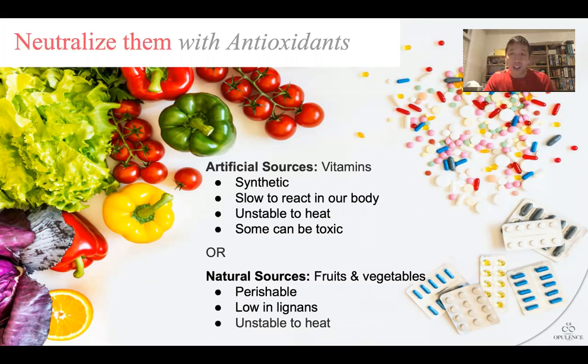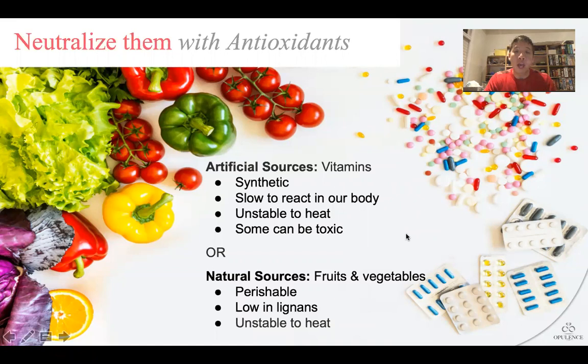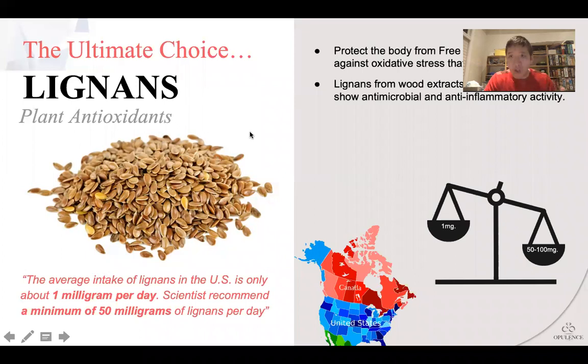A better option than artificial sources are the natural sources. When we're very young, our parents tell us to make sure we eat our fruits and vegetables, because they're much more natural and can be absorbed a lot better than an artificial source. The antioxidants that come from fruits and vegetables — their scientific name is called lignans. Unfortunately, a lot of these fruits and vegetables are low in lignans, they go bad, and they're unstable to heat. The solution that Opulence Global put behind Fountain of Life was to find the best lignan for your body. Lignans are the plant antioxidants, and they can protect the body from free radicals and help fight the oxidative stresses that can cause sickness. The benefit is that if the lignan comes from a wood extract, like it does with Fountain of Life, it's been proven to have antimicrobial and anti-inflammatory benefits as well.